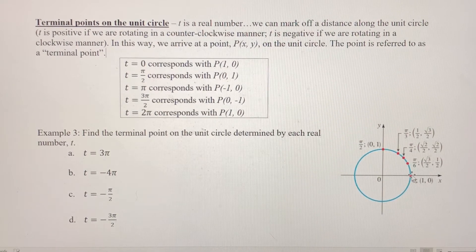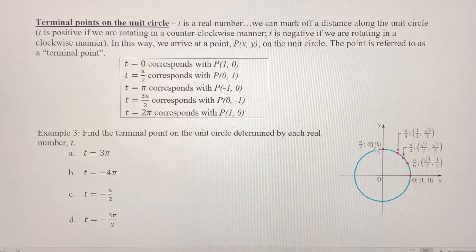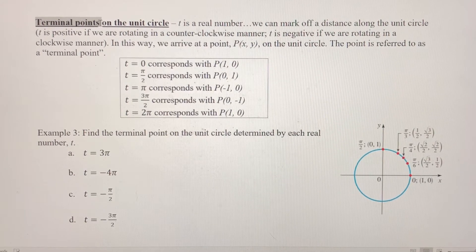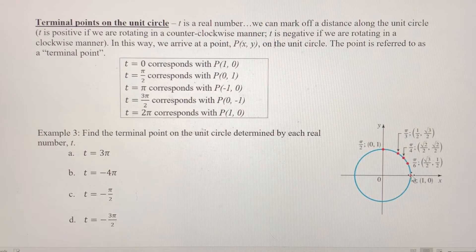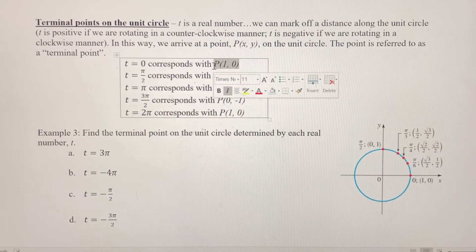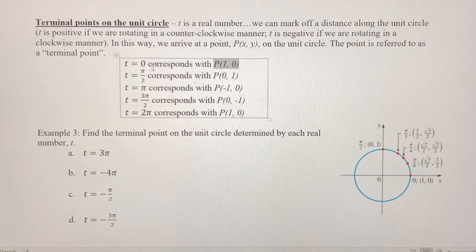Now, if we travel a certain distance — let's say we travel π/2 around this circle, π/2 radians — it corresponds with the point (0, 1), and that ordered pair (0, 1) is the terminal point we're looking for. If T is 0, we always start at (1, 0) and just stay there, since the distance traveled is 0. So the terminal point corresponding to T equals 0 is the ordered pair (1, 0).